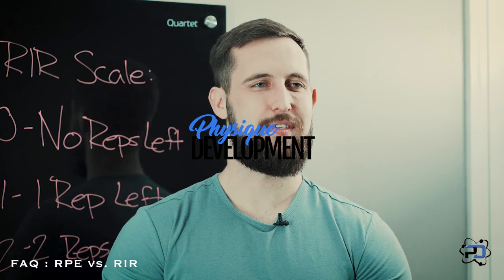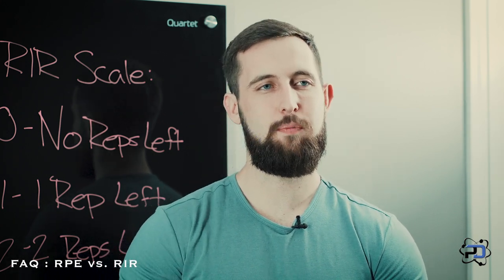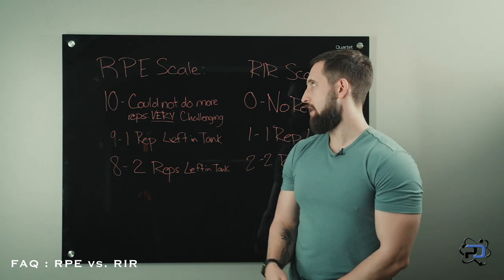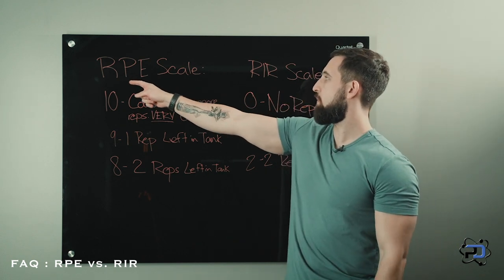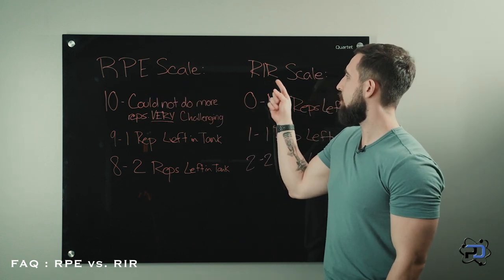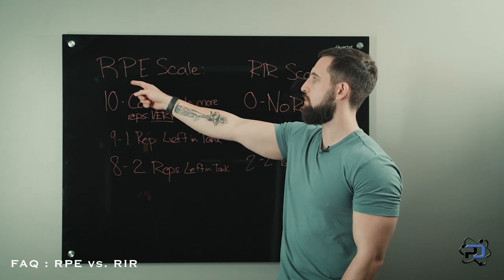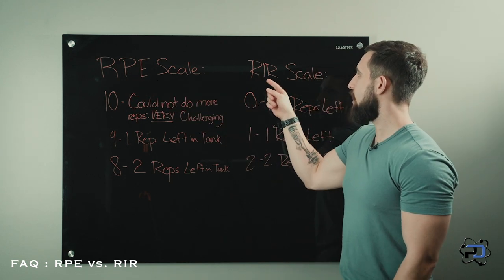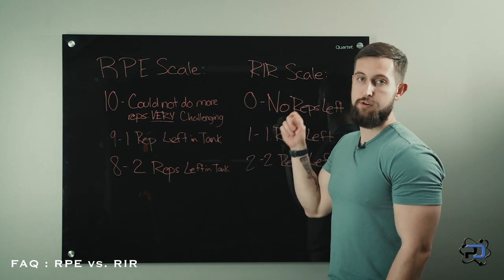Hey guys, Coach Alex here with Physique Development. Today I am going to discuss two terms that you probably hear within your resistance training. Both of these terms are RPE and RIR. RPE stands for Rate of Perceived Exertion, and RIR stands for Repetitions in Reserve.